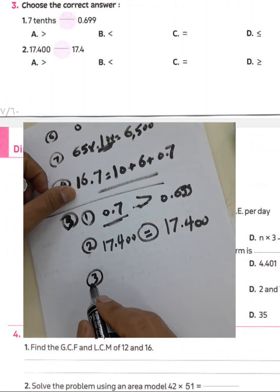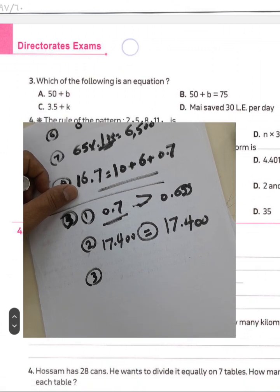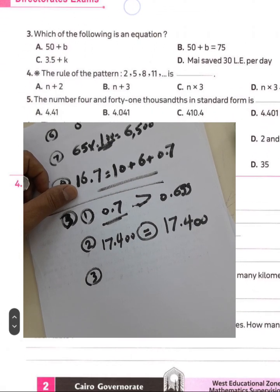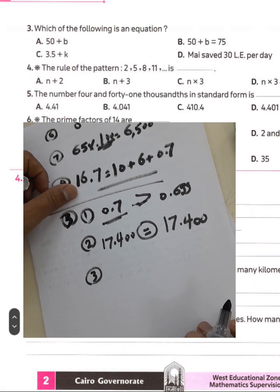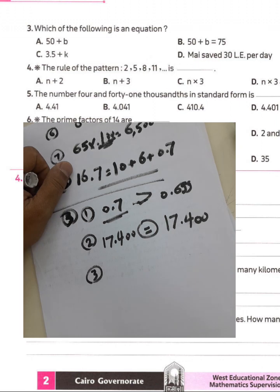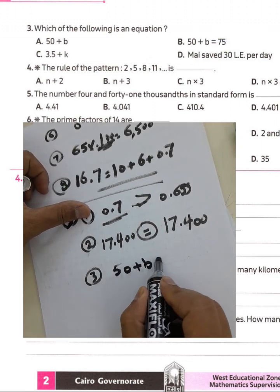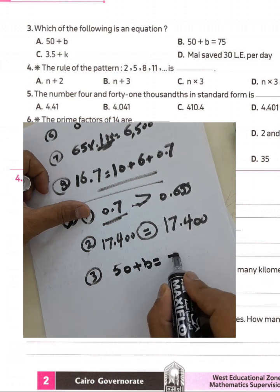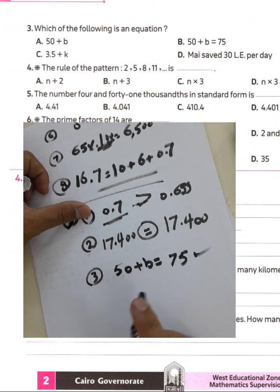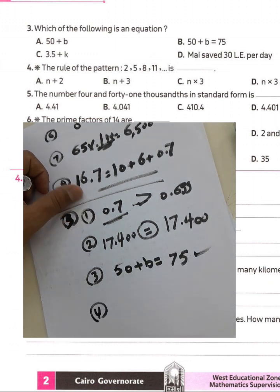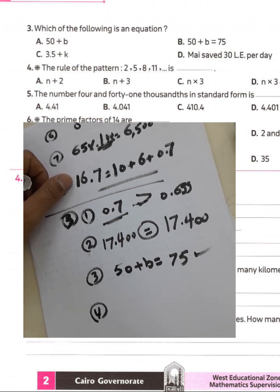Question number three: which of the following is an equation? An equation contains the equals sign between two expressions, so the equation is 50 plus b equals 75. Question number four: the rule of the pattern 2, 5, 8, 11 — the difference is 3, so the rule is n plus 3.